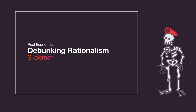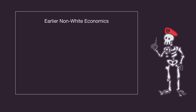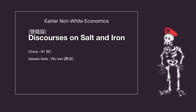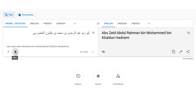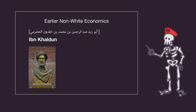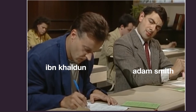The earliest form of economics done by white people is called classical economics. There was other work done in the field of economics by non-white people centuries earlier, such as the work summarized in the Discourses on Salt and Iron in China from 81 BC, in which it was determined over 2,000 years ago that laissez-faire economics is bullshit, or the work of Abu Zaid Abd al-Rahman bin Muhammad bin Khaldun al-Hadramiyu, or Ibn Khaldun, an Arab scholar born in Tunis in 1332, whose work bears a striking resemblance to the work of Adam Smith, who would come a few hundred years later.